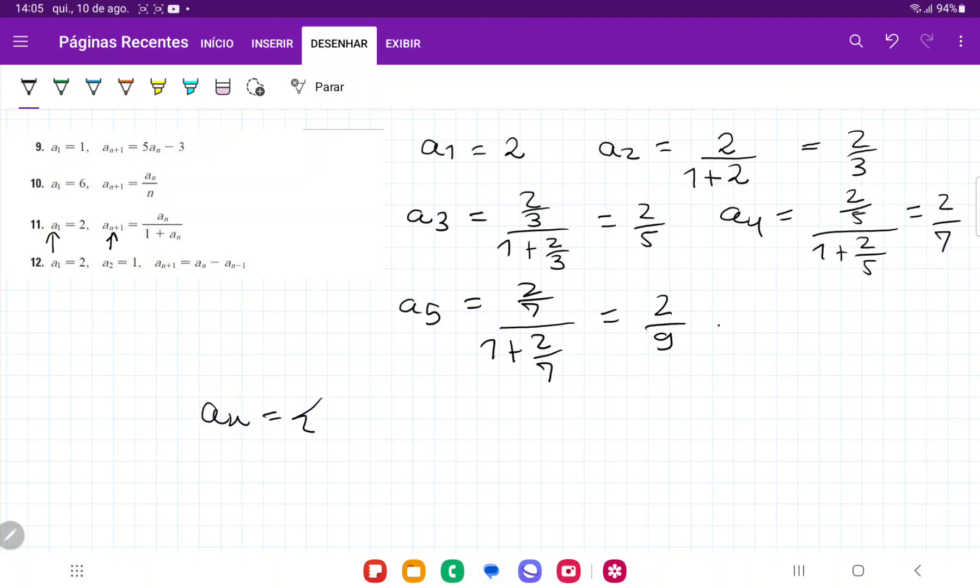And so this sequence here, when we expand it through the recursive formula, we get 2, 2 over 3, 2 fifths, 2 sevenths, 2 ninths, and so on. And so that's what we get when we expand this sequence through their recursive formula.